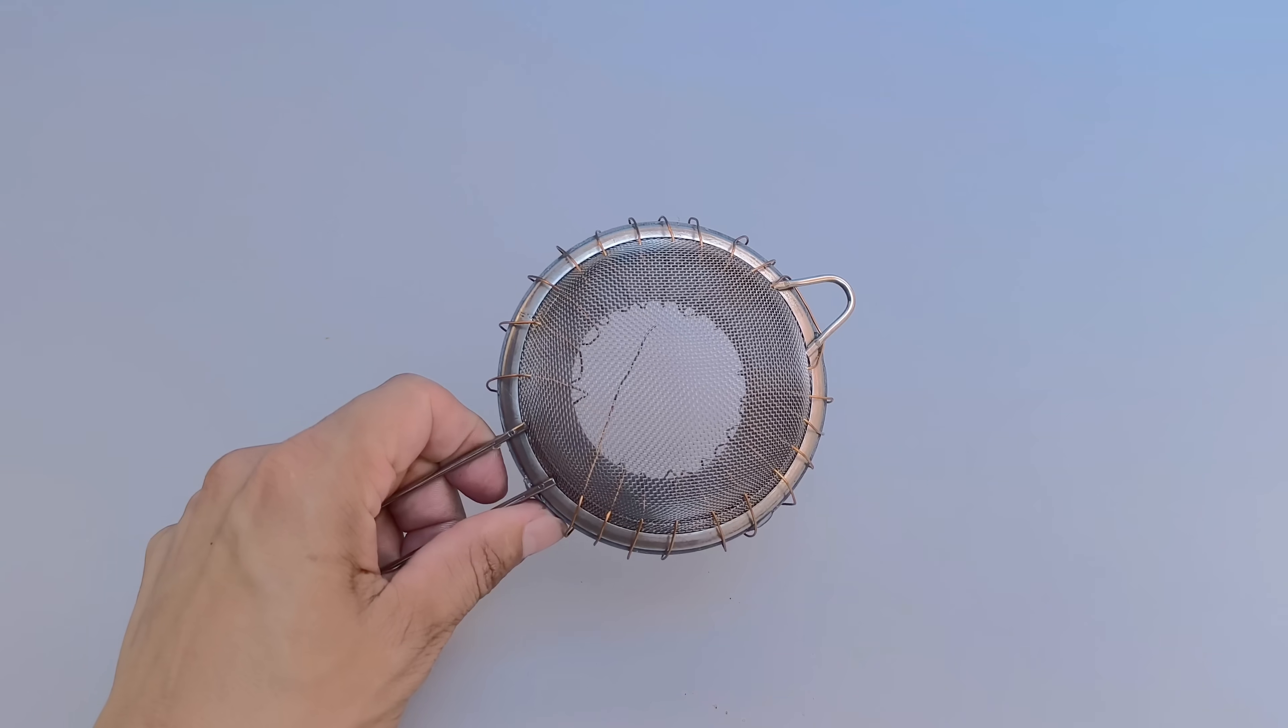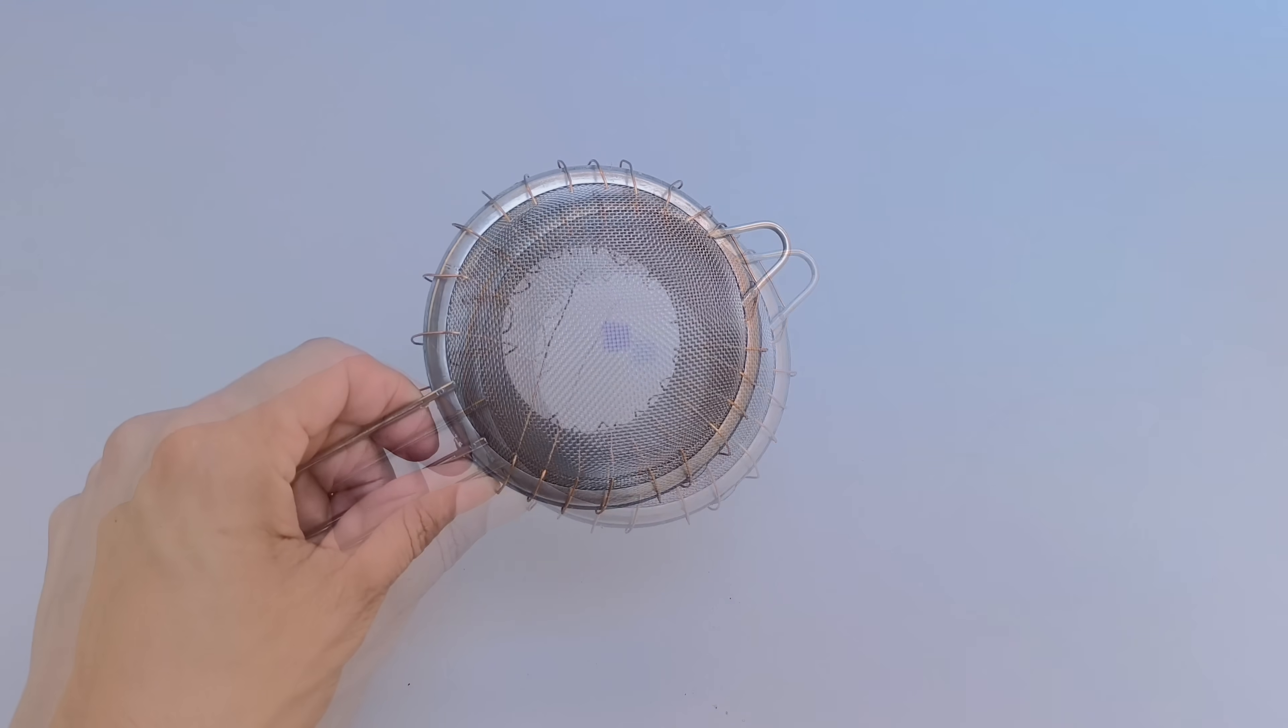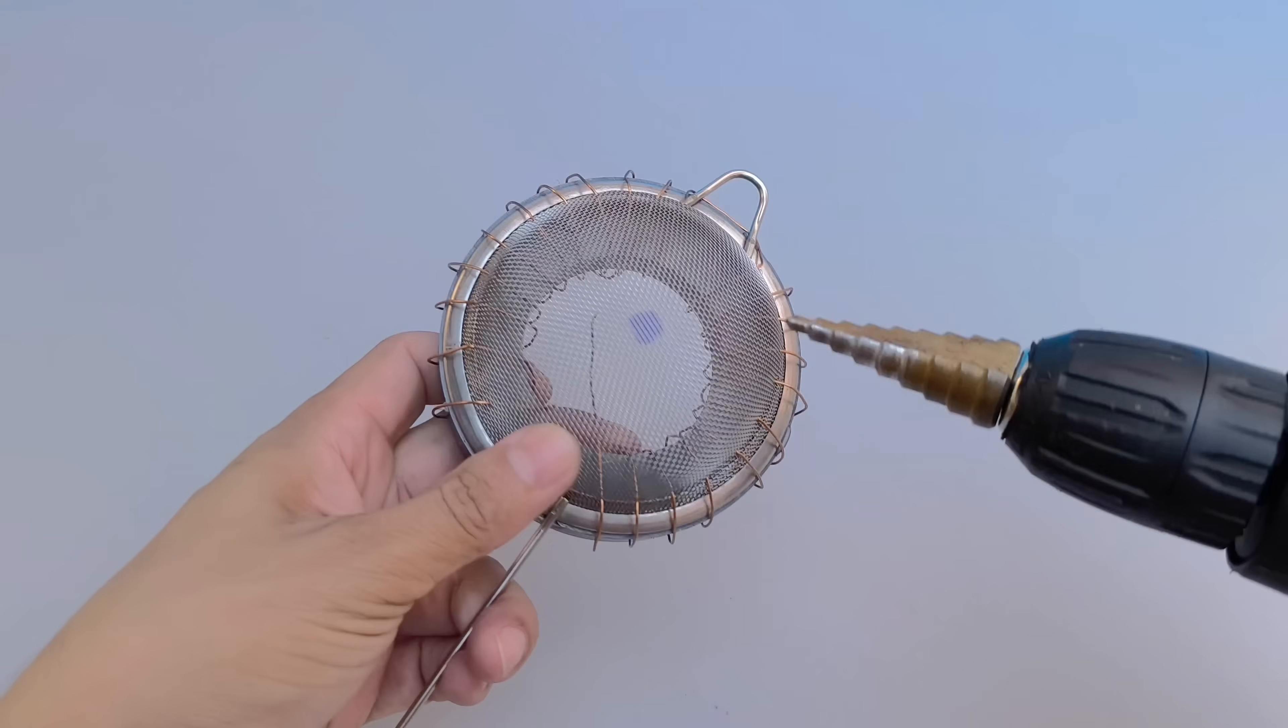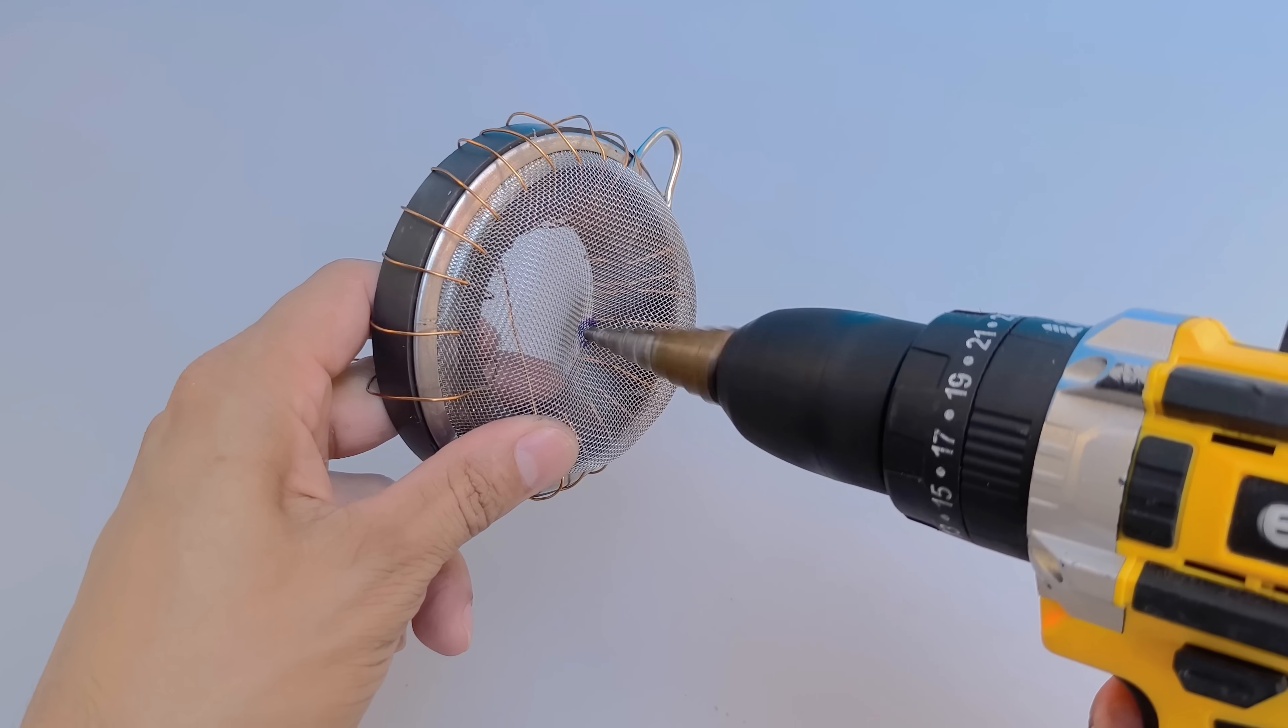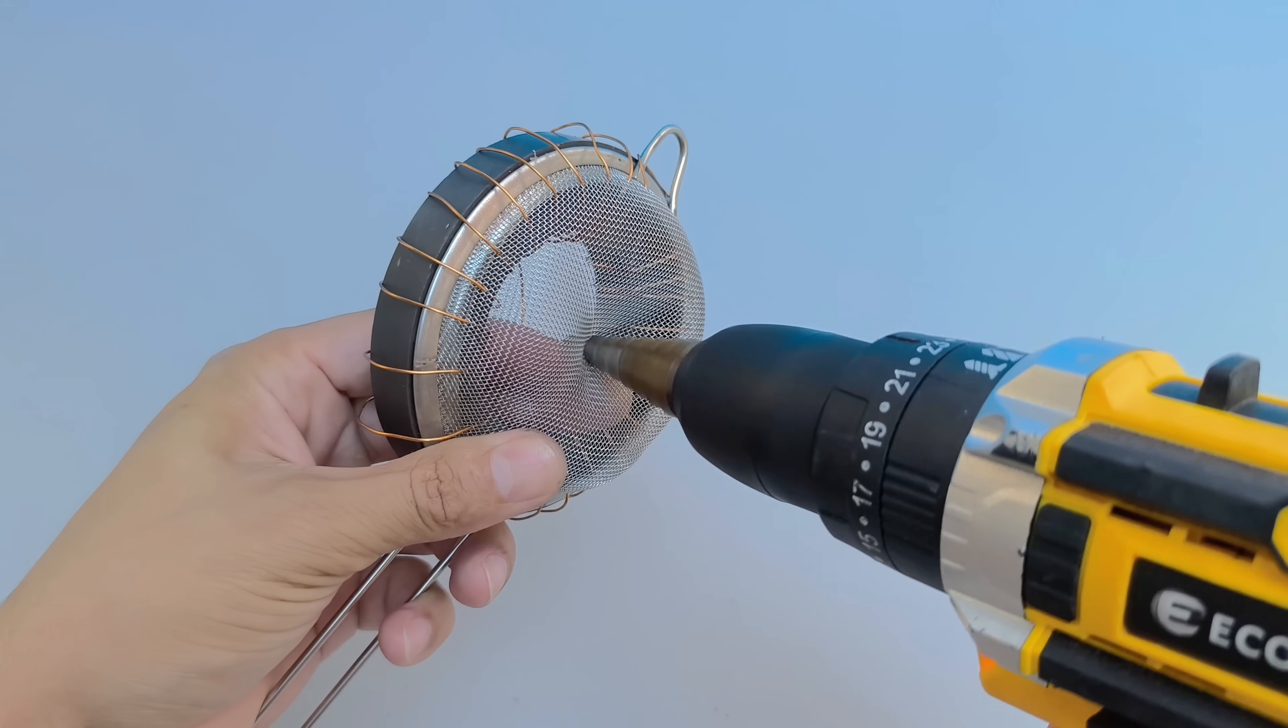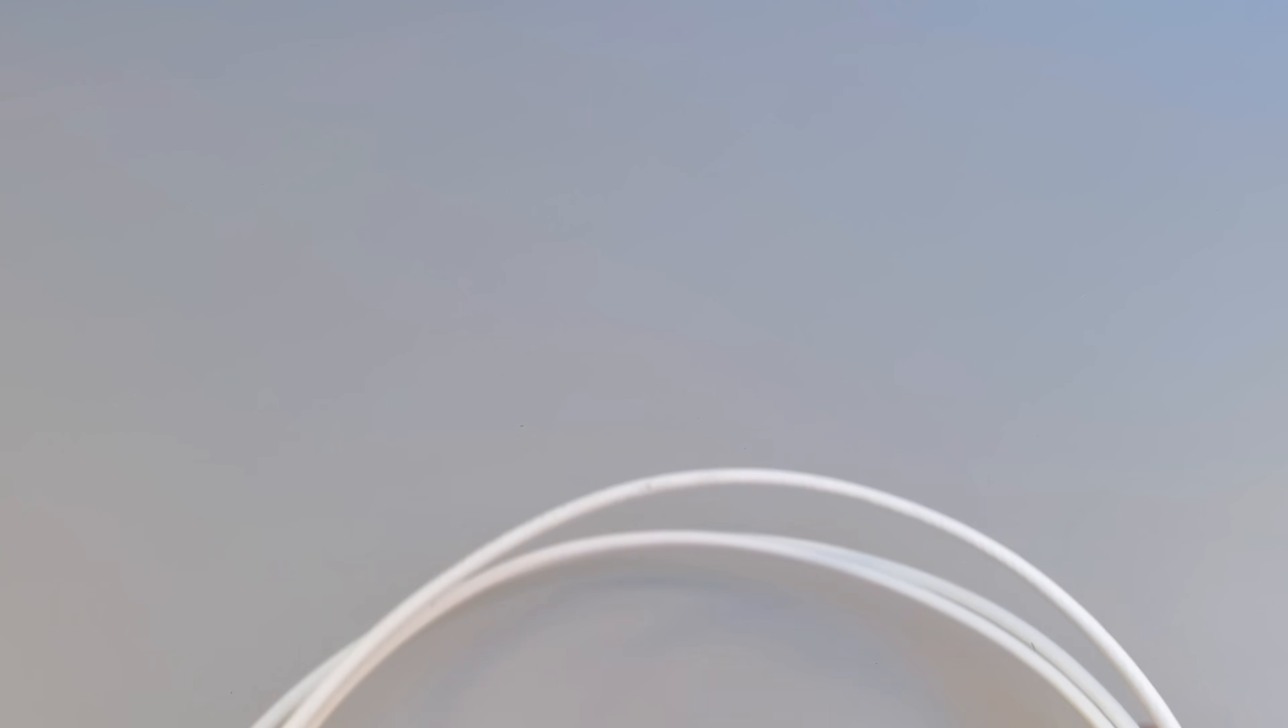Now, return to the stainless steel sieve already equipped with the magnet and the coiled copper wire. Mark the center of the sieve and, using a drill equipped with a stepped bit, make a hole whose diameter corresponds to that of the coaxial connector. This hole will be used to attach the connector and consequently the antenna to the center of the sieve.